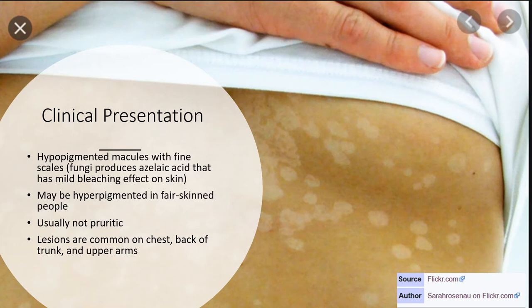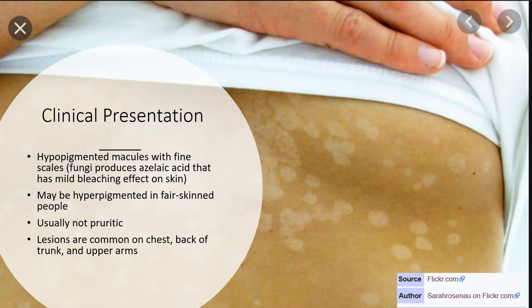When talking about the clinical presentation, patients normally present with hypopigmented macules — some kind of partial depigmentation. Macules are lesions that are not elevated from the surface. There may be fine scales visible on scratching. This hypopigmented effect is thought to be due to azelaic acid produced by the fungi — azelaic acid is a mild bleaching agent responsible for the mild depigmentation of the skin.